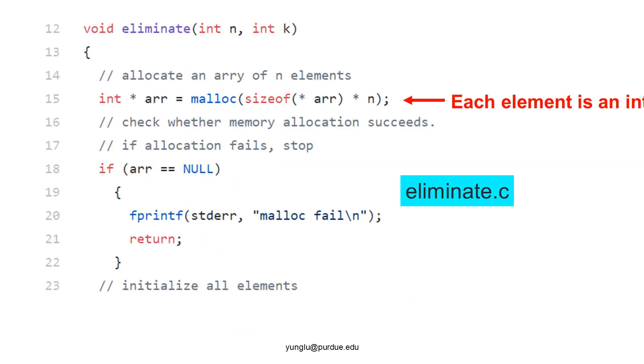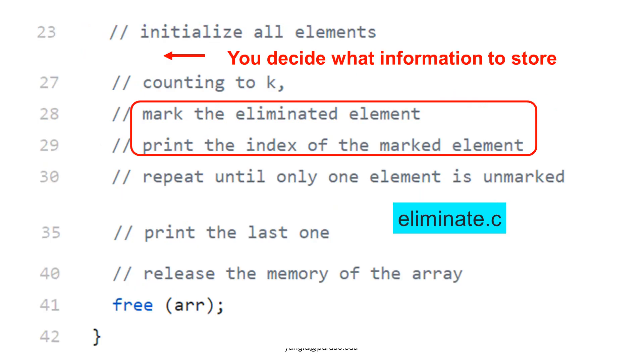At the top of the eliminate function, an array of integers is allocated. Each element is an integer. You decide how to use the array. The program will find the indexes of the removed people and print their indexes. At the end of this function, the memory is released.